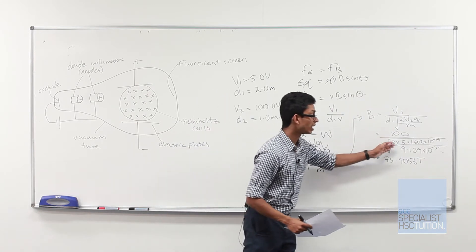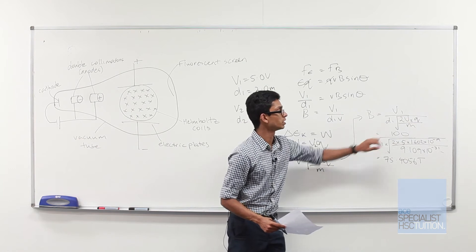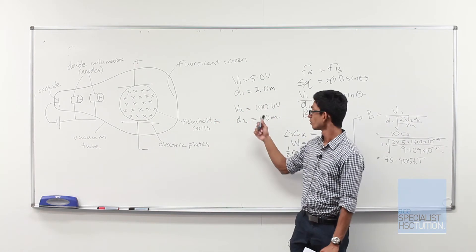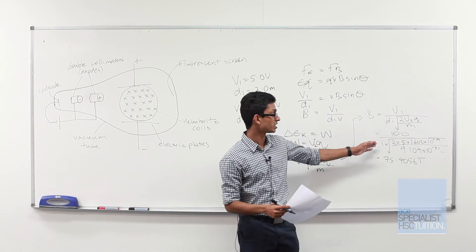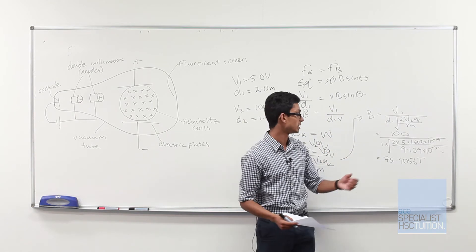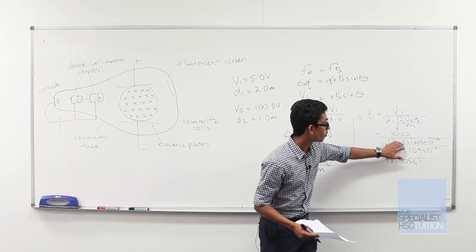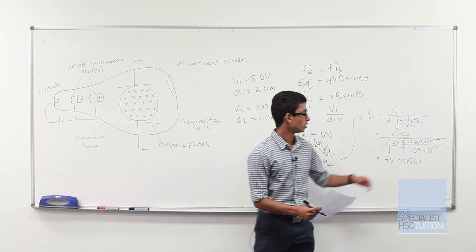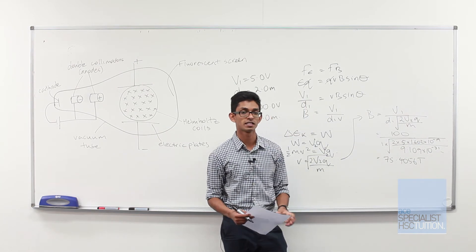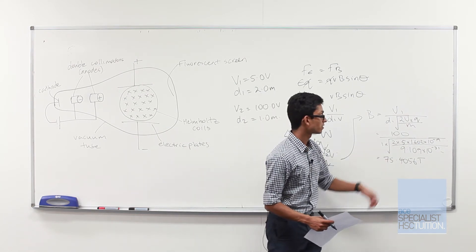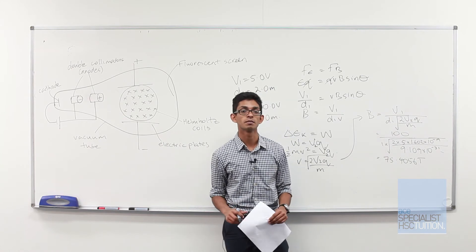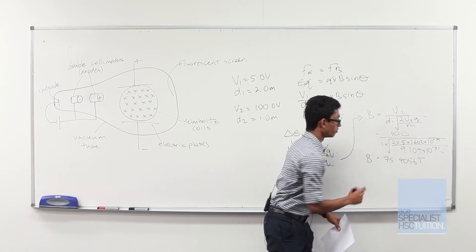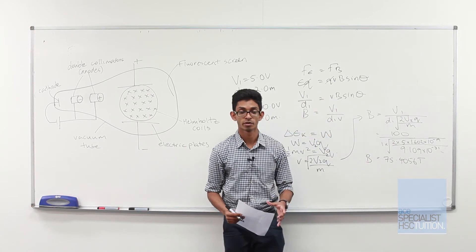So these values that I got were straight out of our data sheet. We know 100 volts is the strength of the electric field from here. We know the distance between those two electric plates is one metre. We know 5 being the voltage between our cathode and our anode. We know the charge of electron is 1.602 times 10 to the minus 19, and the mass of an electron is 9.109 times 10 to the minus 31, which gives us our answer of B is equal to 75.4056 Tesla.